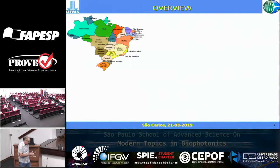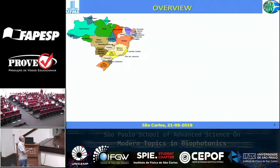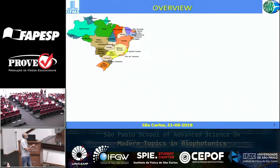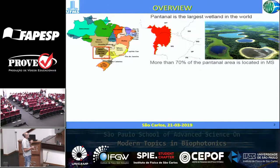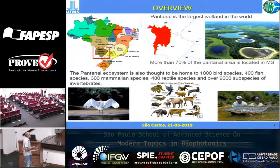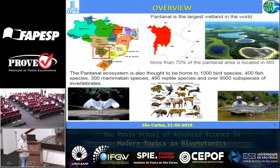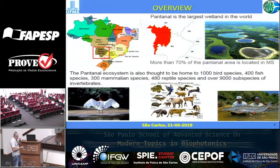Mato Grosso do Sul is one state located in the central west of the country. It has a lot of natural beauty. The Pantanal is located in Mato Grosso do Sul — more than 70% is there, with another part in Mato Grosso, which is a different state. The Pantanal has a lot of diversity, different kinds of animals. It's a good place to visit if you have the opportunity.